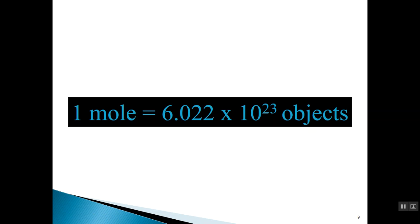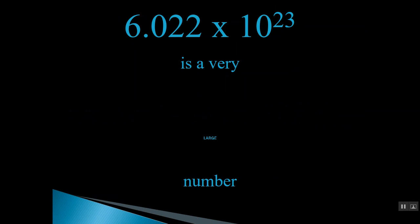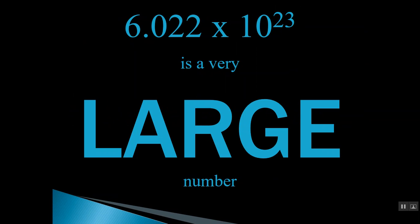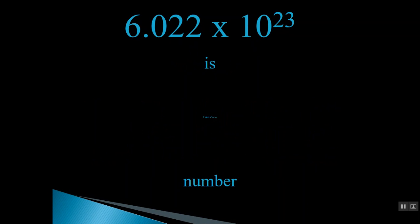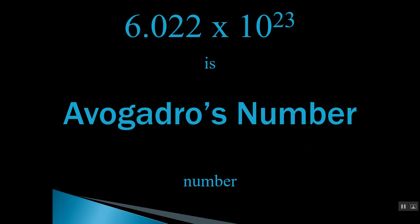In chemistry, we tend to use the mole in conjunction with atoms, molecules, ions, and so on. The number 6.022 times 10 to the 23 is a very large number, and it has a name attached to it. It's called Avogadro's number, named after the Italian scientist.